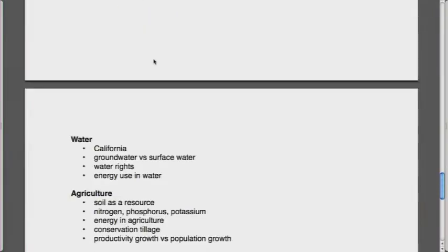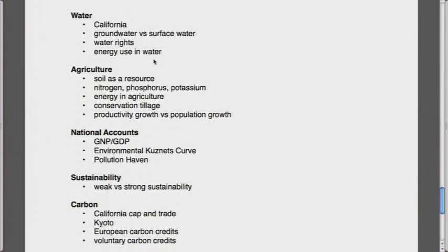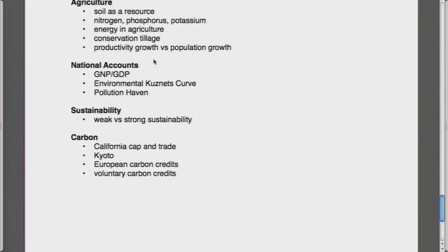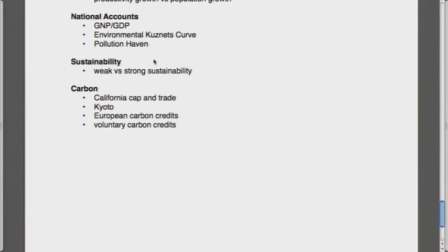And then in the last few weeks of class, we talked about water. Some specifics of water in California. What should the price of water be? What is the price of water? We talked about agriculture and soil as a resource in agriculture and different ways that we replace that resource. We talked about energy intensity in agriculture. And then we did global accounting, GDP and NDP, introduced those terms. Talked about incorporating resources and bringing prices into those. We talked about the environmental Kuznets curve and how pollution may go up and go down in the middle of the country.